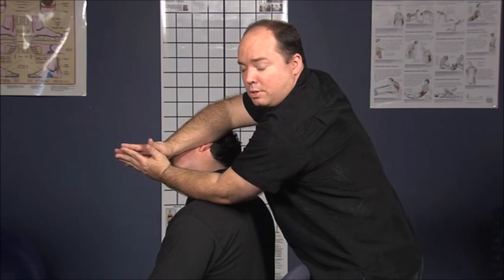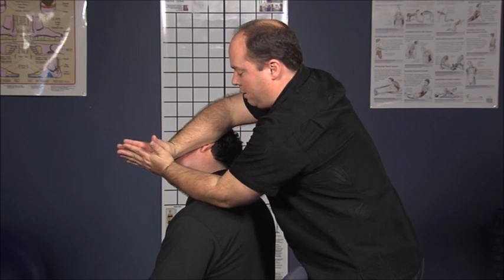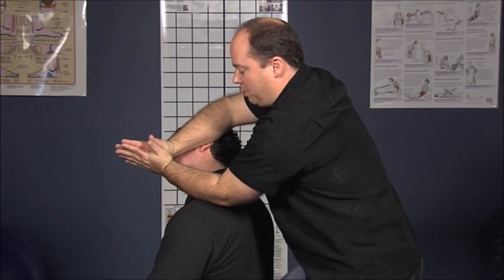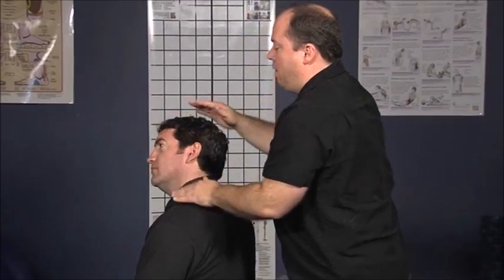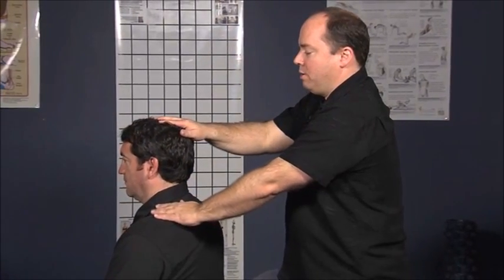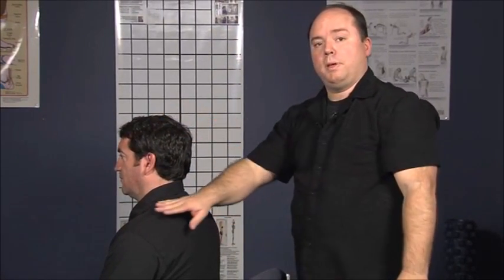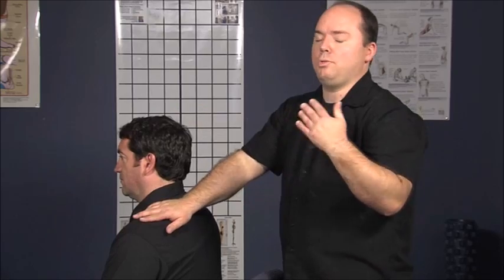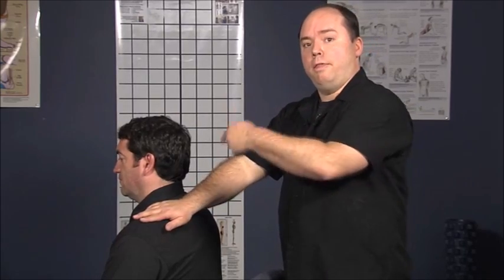You're going to separate your arms and hold for 30 seconds and then you're going to slowly release, help them return their head back to the starting point. Again, you want it to be a passive stretch so you don't want them to do the moving, you want to move them for them.